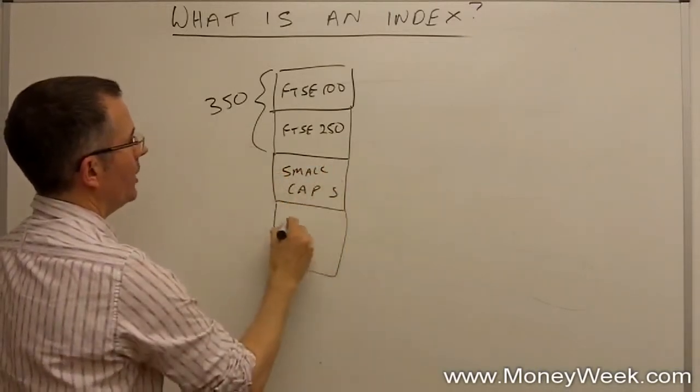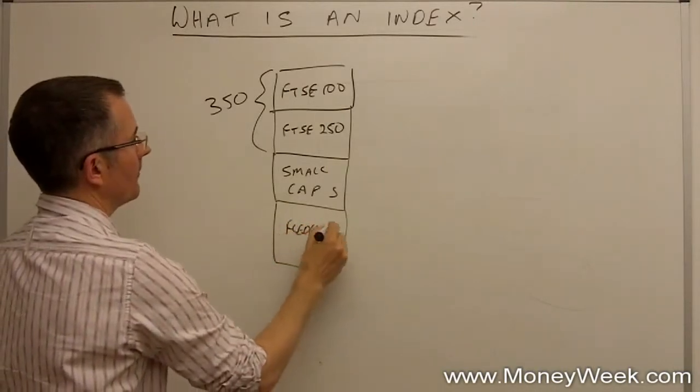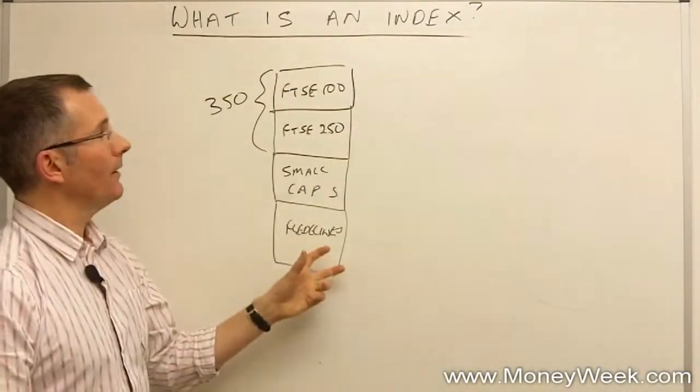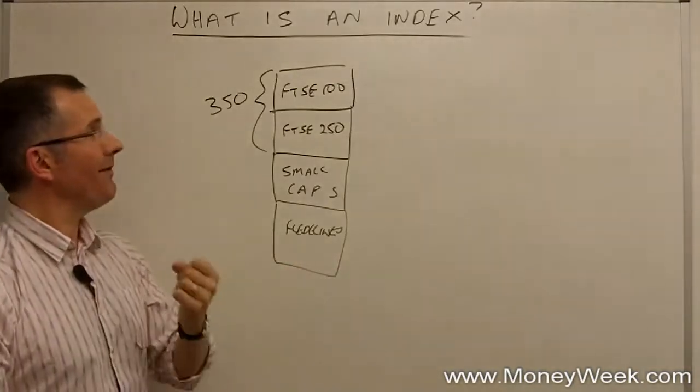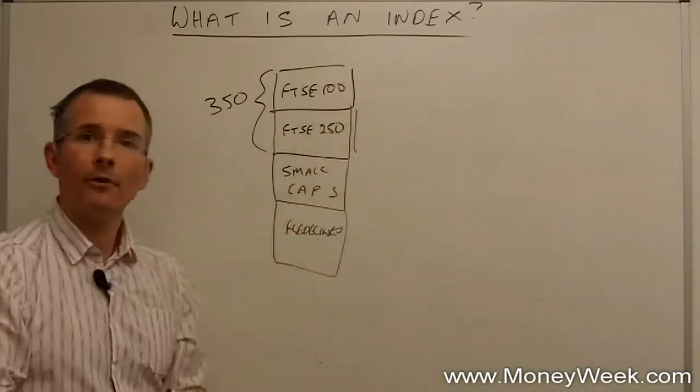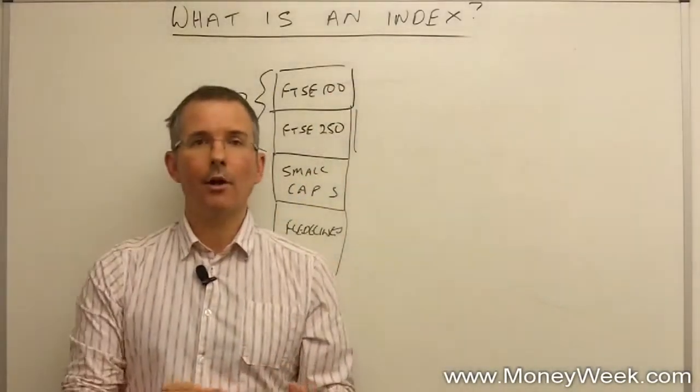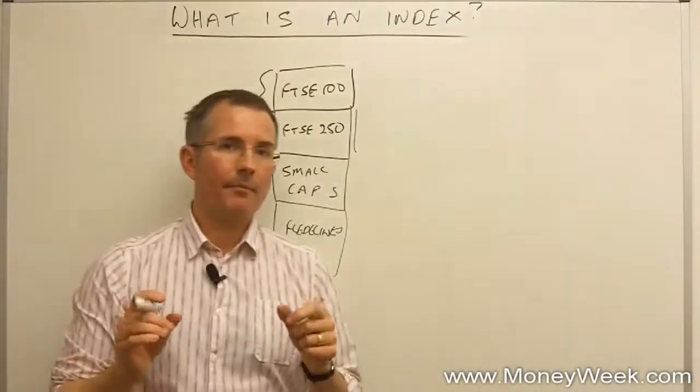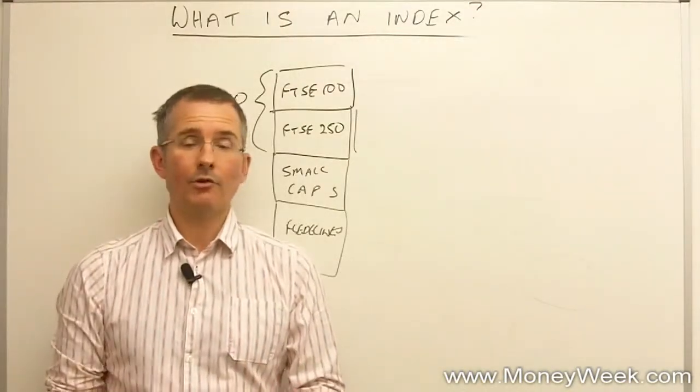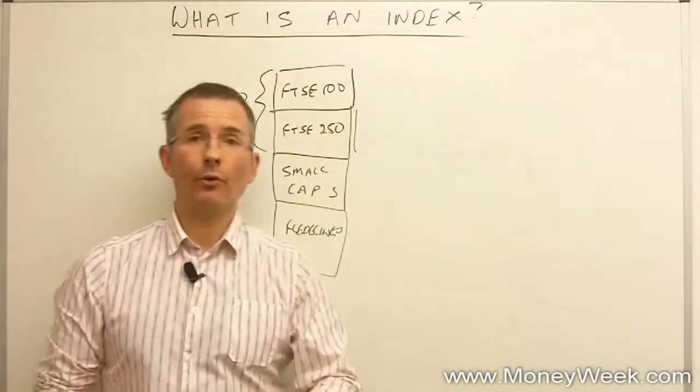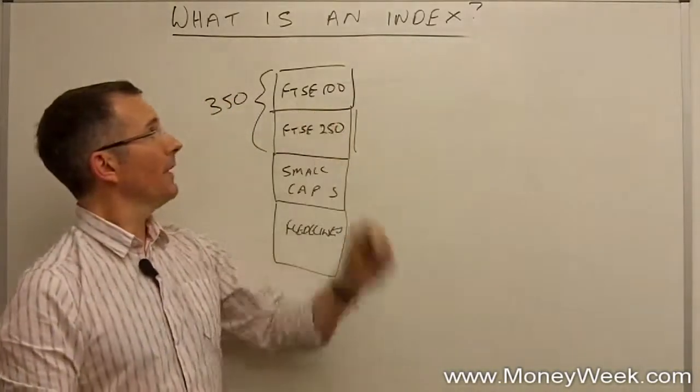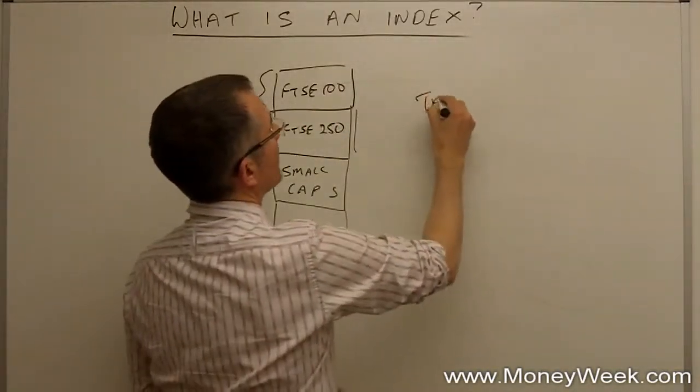Then carry on down in terms of size ranking and you hit the small caps. Carry on further still and you hit the fledglings, and so on. Depending on which part of the market you're interested in, you might pick a different index. In the last tech boom, people just wanted to know what the biggest technology stocks were in the UK - not just the biggest stocks. The FTSE 100's got all sorts of banks and oil companies. Hence the Techmark 100.